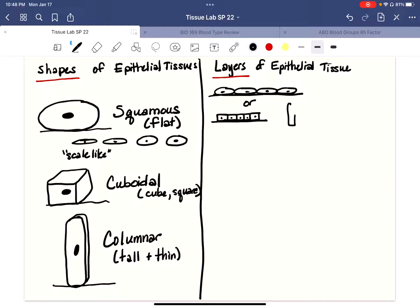Then of course we could have one layer of columnar cells sitting on a basement membrane. All right, so let's call this layer simple. Simple means one. So if it's a simple epithelium, it has one layer regardless of whether it's squamous, cuboidal, or columnar. It just means there's only one layer.